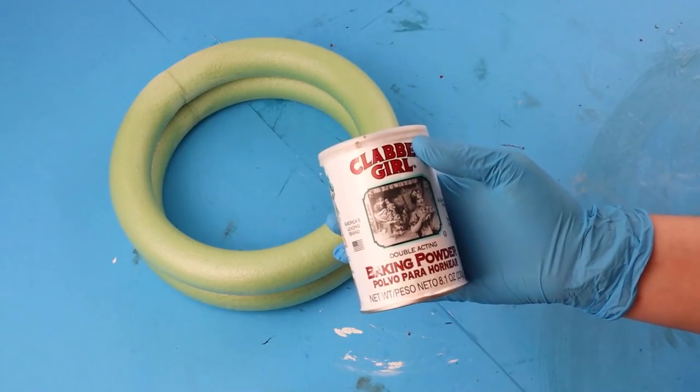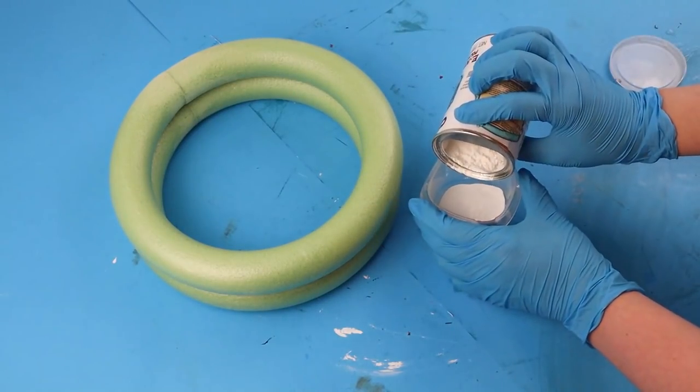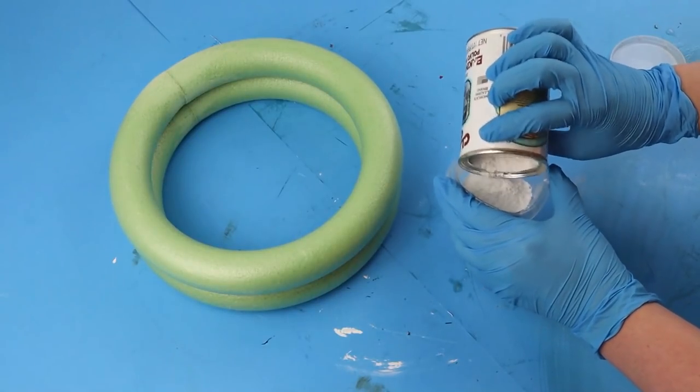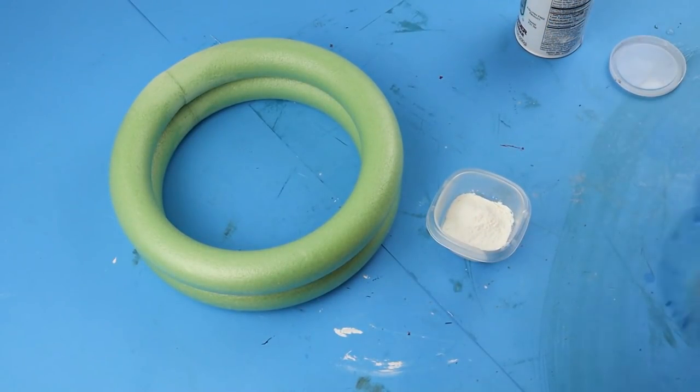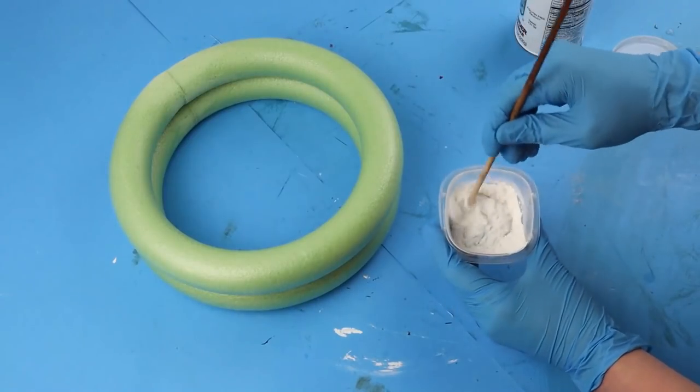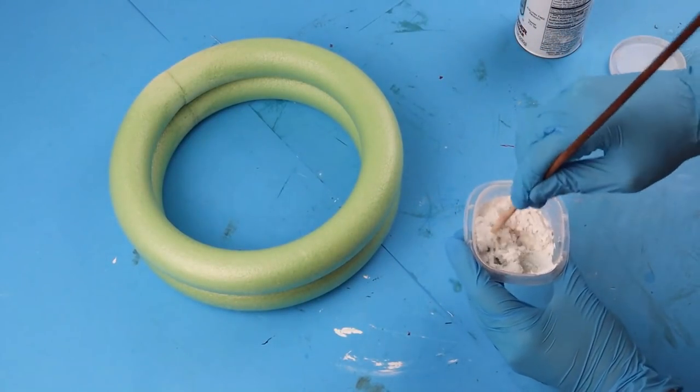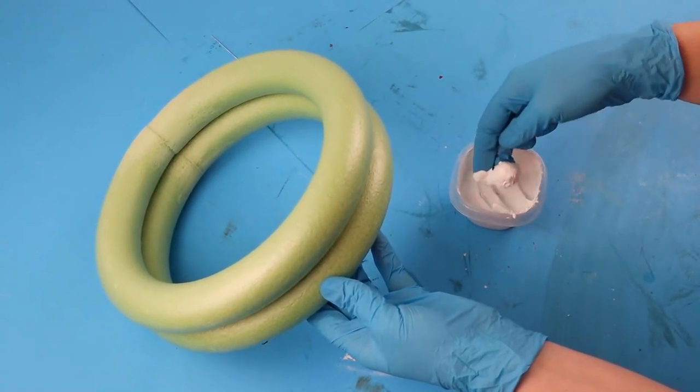Then to paint it, I went in with the Waverly chalk paint in the color white and some baking powder. If you've watched some of our recent videos, you've seen that we've used this technique a lot. I think it gives it a nice texture and just looks a lot cleaner. Here I put in way too much so I just watered it down slightly and then it came out to be the perfect texture.